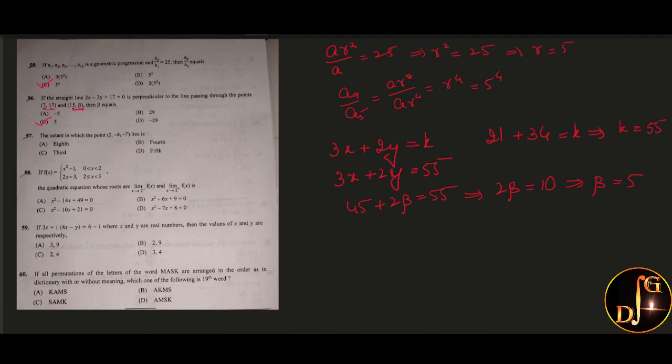Next, the octant in which the point 2, minus 4, minus 7 lies. Obviously, it is in the 8th octant, that is option D.